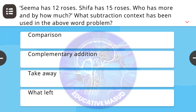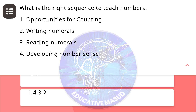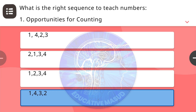Next question: which of the following is the most crucial aspect of learning multiplication? Correct answer is understanding multiplication as finding how many times. Next question: Sima has 12 roses, Shifa has 15 roses — who has more and by how much? What subtraction context has been used in the above word problem? Correct answer is comparison. Next question: what is the right sequence to teach numbers — opportunities for counting, writing numerals, reading numerals, developing number sense? Correct answer is one, four, three, two.